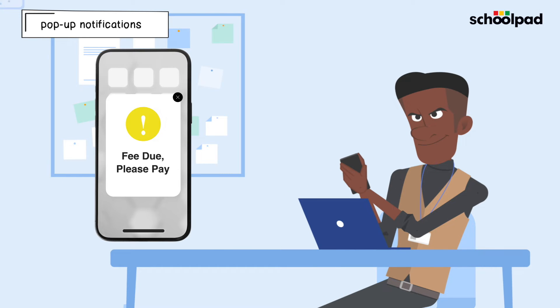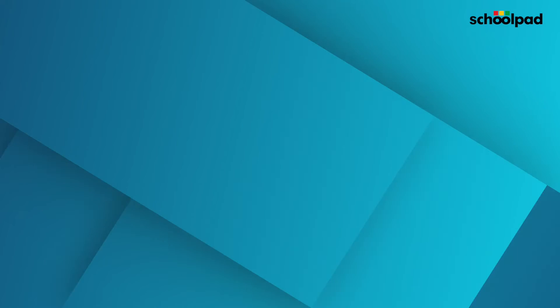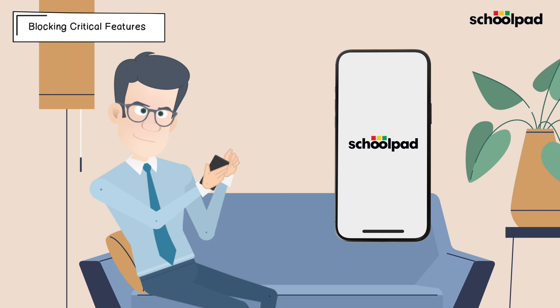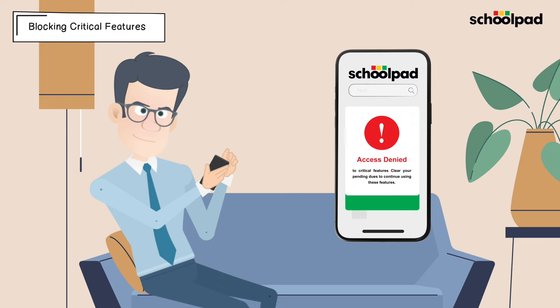There is a feature that allows you to send pop-up notifications on the mobile app, and another feature for blocking critical features until the parents clear their dues.